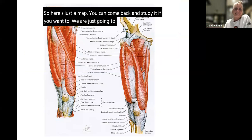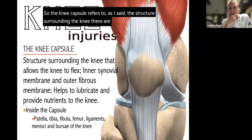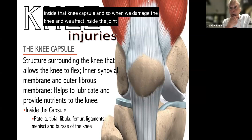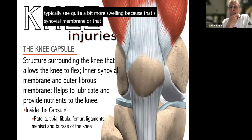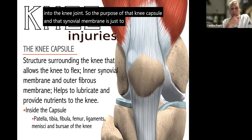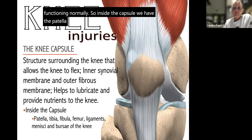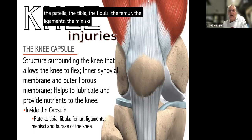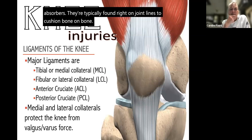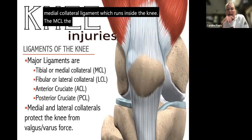The knee capsule refers to the structure surrounding the knee. There is a synovial membrane inside that capsule, and when we damage the knee and affect the joint capsule we typically see quite a bit more swelling because that synovial fluid escapes into the joint. The knee capsule and synovial membrane provide nutrients, lubricate the knee, and help things function normally. Inside the capsule we have the patella, tibia, fibula, femur, ligaments, menisci, and bursae — fluid-filled sacs that act as shock absorbers, typically found right on joint lines.